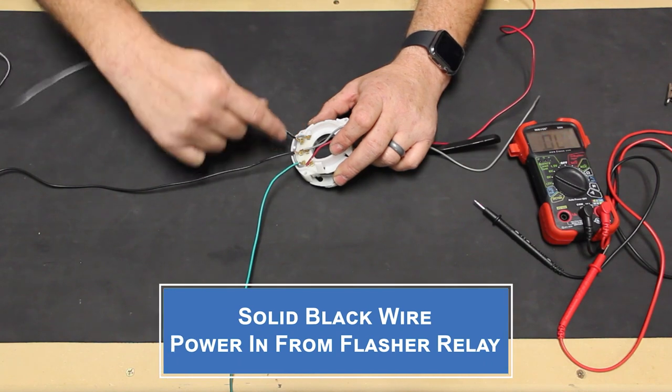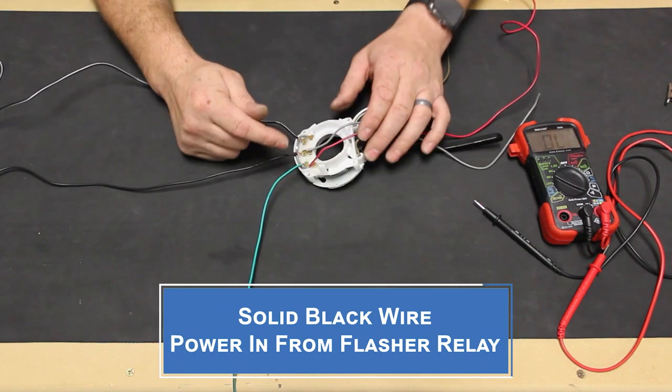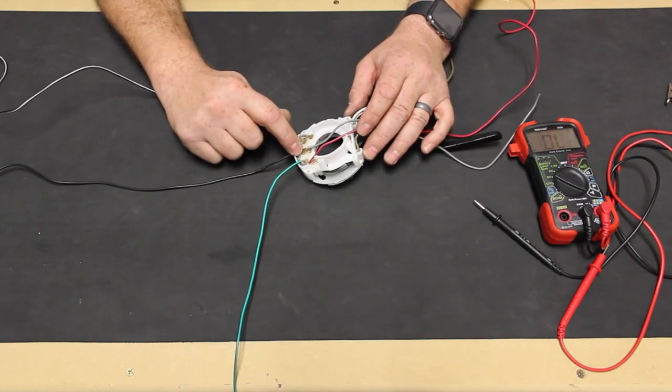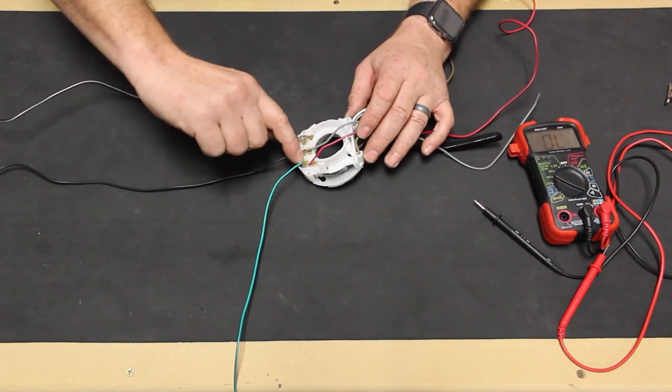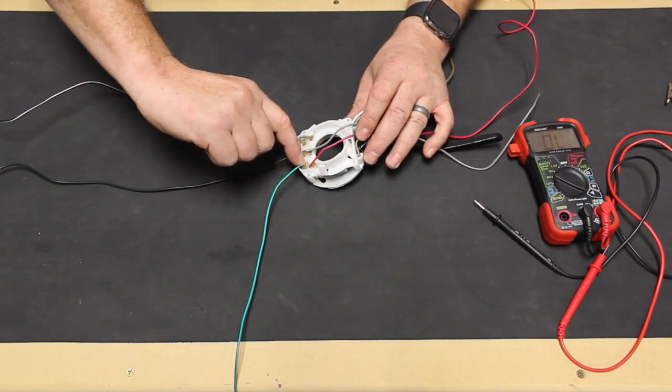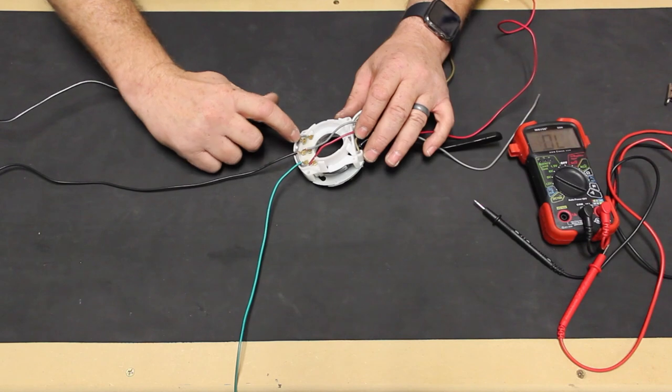The black wire at the center terminal is power into the switch from the flasher relay. As our switch is currently positioned, the lower terminal is power out to the right side, the upper terminal is power out to the left.